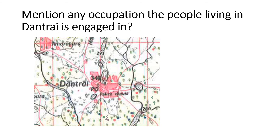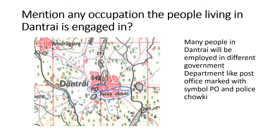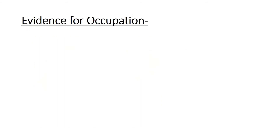Mention any occupation the people living in Dantrai are engaged in. In Dantrai, we can see a post office and a police chowki. So you can write: many people in Dantrai will be employed in different government departments like the post office, marked with symbol PO, and the police chowki.